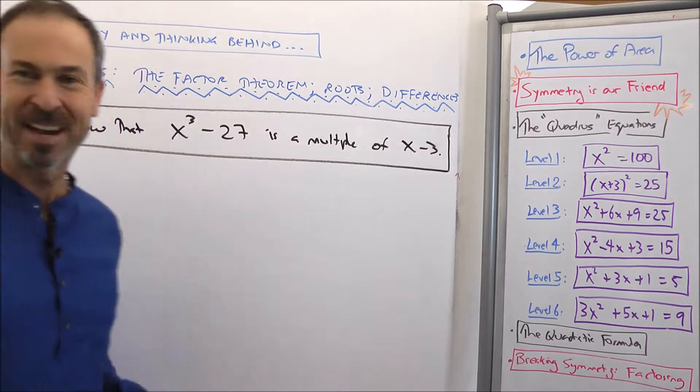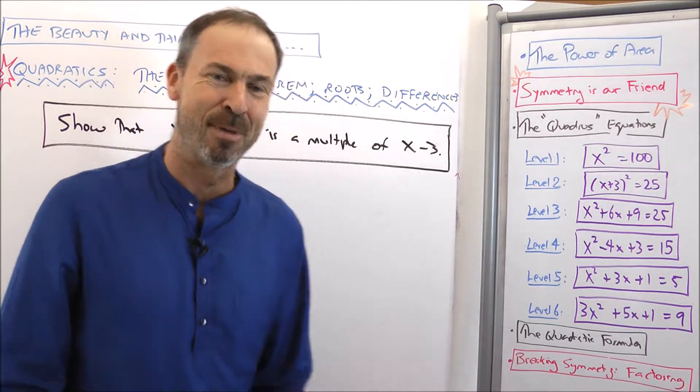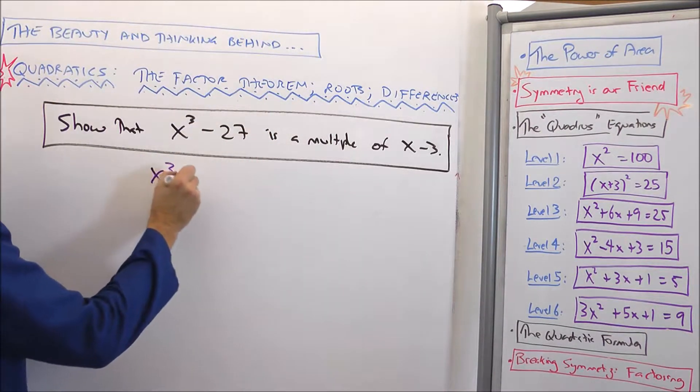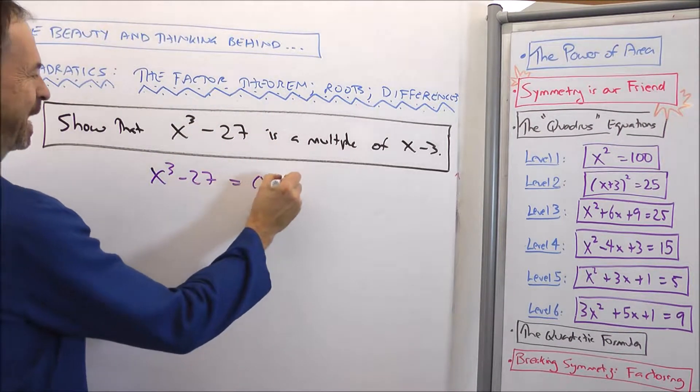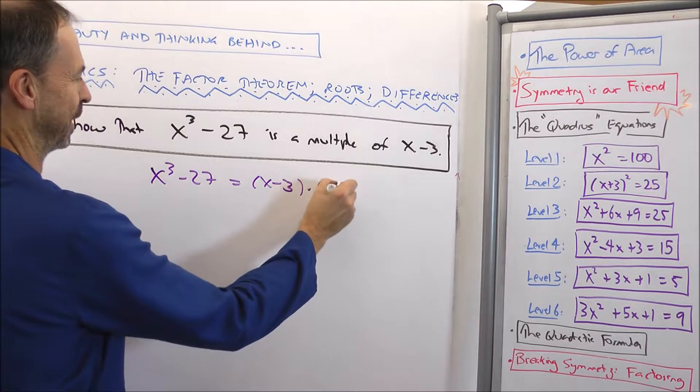Therefore, by the factor theorem, yes, this must be a multiple of x minus 3. That is, x³ minus 27 must be (x minus 3) times something,